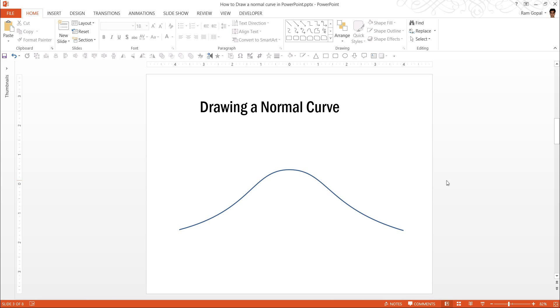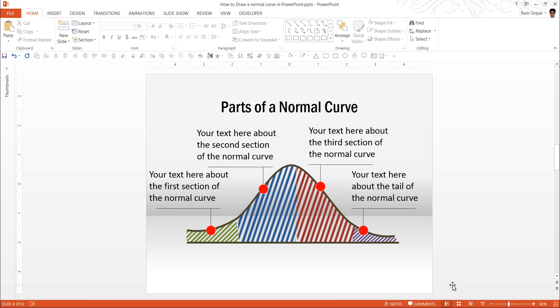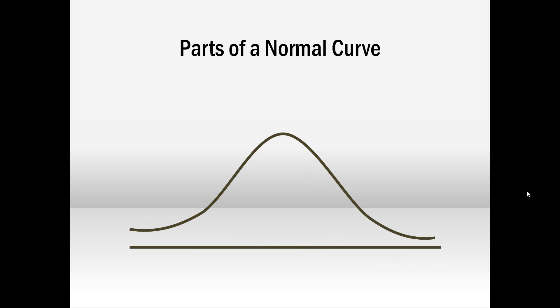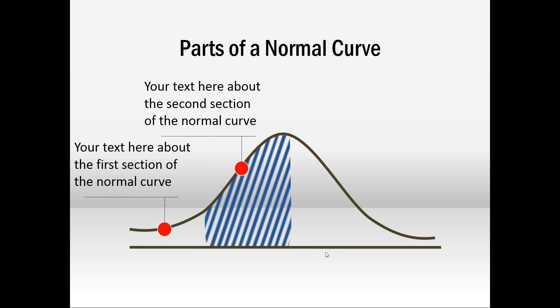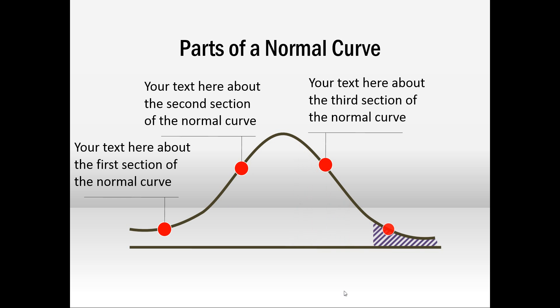If you want to, you can always divide a normal curve into its individual segments, like the way it happens in a product life cycle, and show the various segments along the normal curve. I am going to show you an animated, custom animated version of a normal curve which is divided into four points. On the first click you have the first segment shown with animation, then the second, third, and fourth. So you have a simple way to explain the parts of a normal curve.